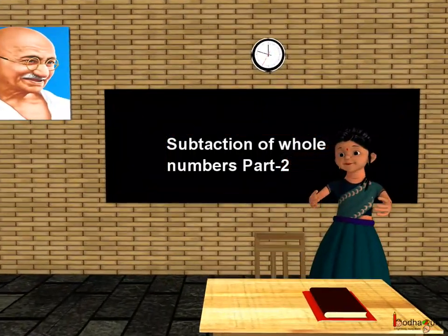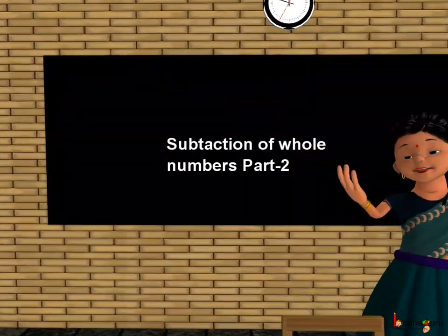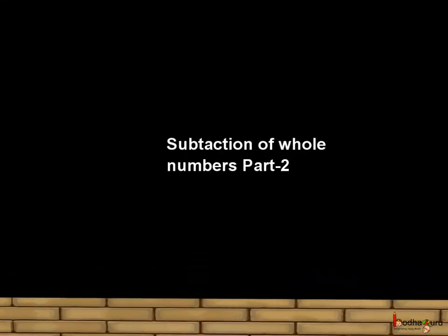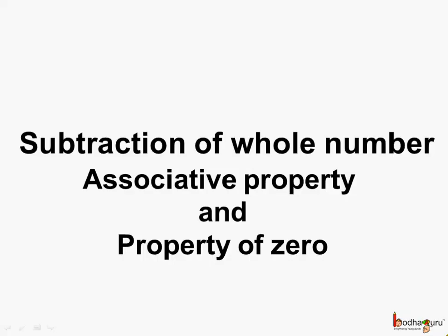Good morning children. Now we know the two properties related to subtraction of whole numbers — the closure property and commutative property. Let's see the other properties related to subtraction of whole numbers.